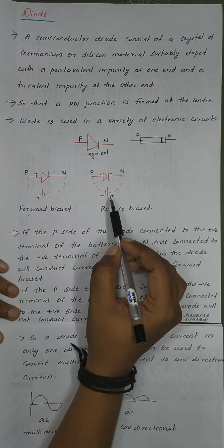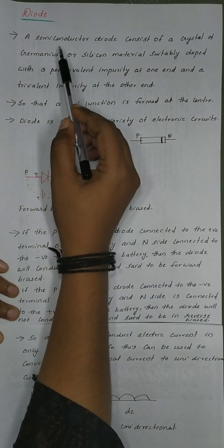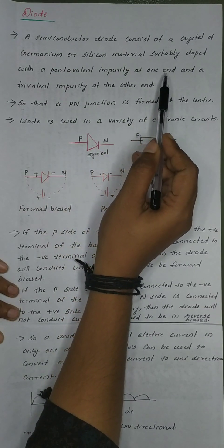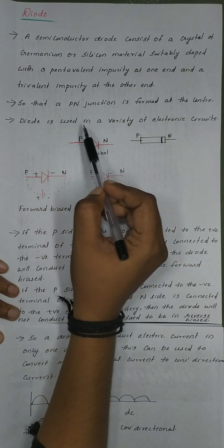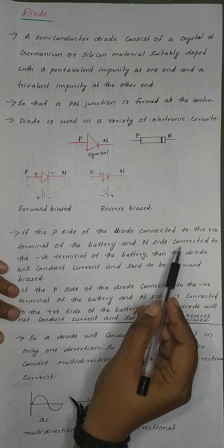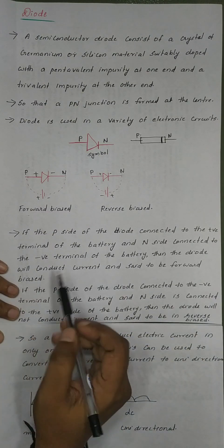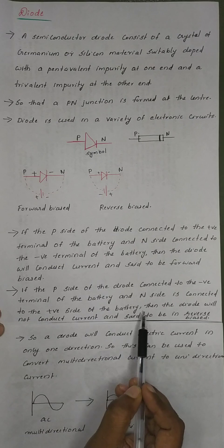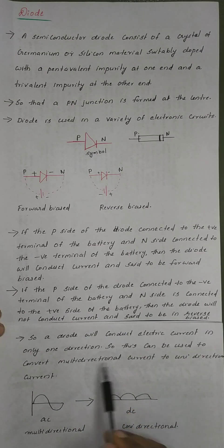This is the reverse bias. This diode consists of a crystal of germanium or silicon material, suitably doped with a pentavalent impurity at one end and a trivalent impurity at the other end, so that a PN junction is formed at the center. If the P-type of the diode is connected to the positive terminal of the battery and the N side to the negative terminal, then the diode will conduct current and is said to be in forward bias. If the P side is connected to the negative terminal, then the diode will not conduct current and is said to be in reverse bias.